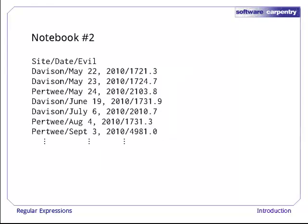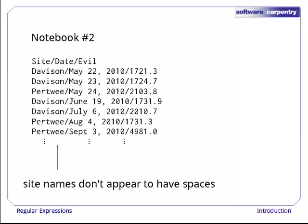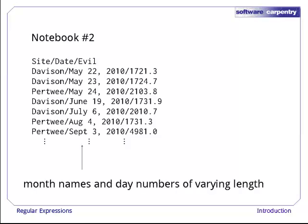Let's have a look at the second notebook. Here, they're using slashes as separators. There don't appear to be spaces in the site names, but the month names and day numbers are of varying length, the months are text, and the order is month, day, year, rather than year, month, day.